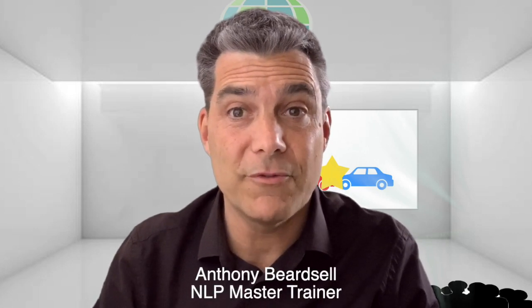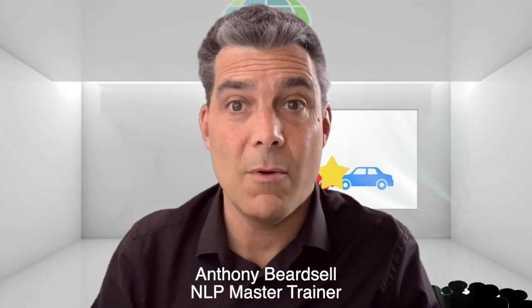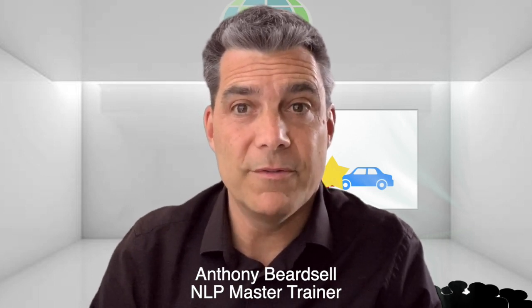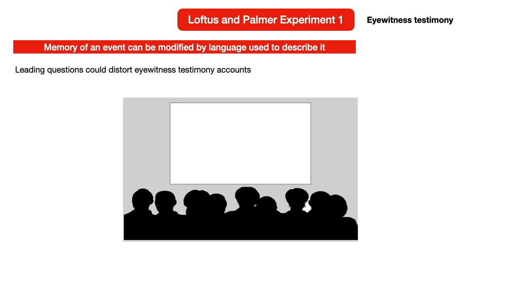In this video, I'm going to illustrate how false memories are created, how we distort memories by the information that we acquire after an event, the questions that are asked about that event, and the words used to describe it. I'm going to explain this by describing two experiments done by cognitive psychologist Elizabeth Loftus and John Palmer back in the mid-1970s.